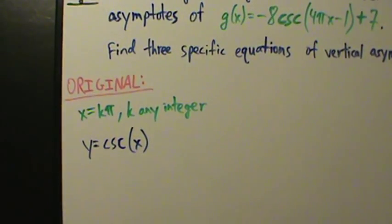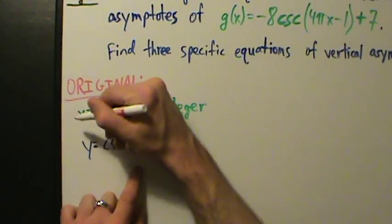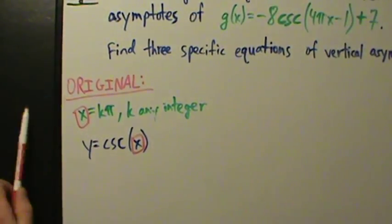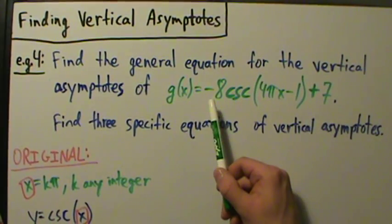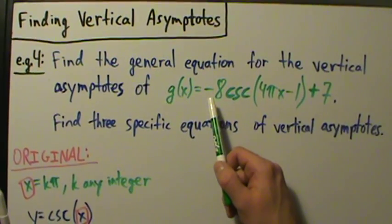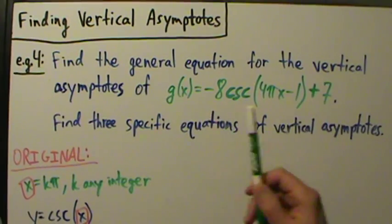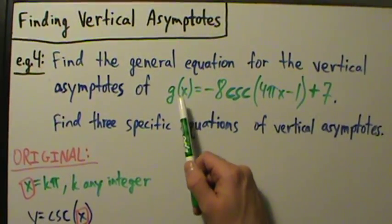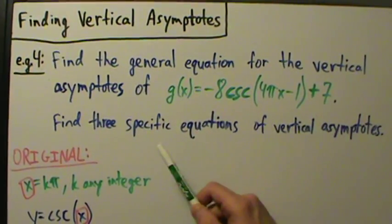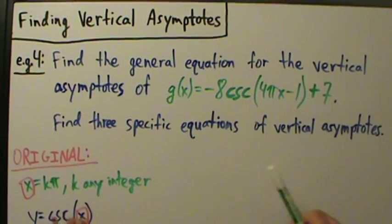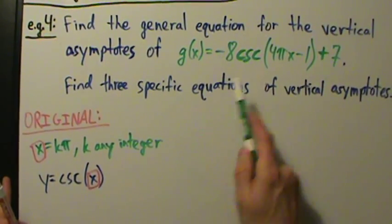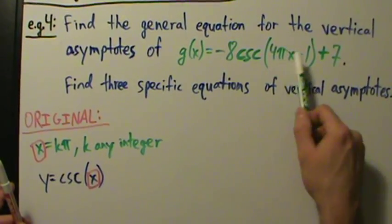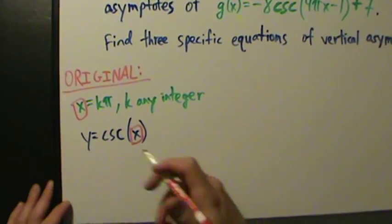Just like we've been doing in examples 1, 2, and 3, we take the entire expression inside the cosecant and set it equal to kπ. The only things that matter are which trig function it is and what's inside of it. The -8 makes absolutely no difference, the +7 outside changes nothing, and the name g(x) makes no difference. Since it's a cosecant, we use kπ - just like cotangent also uses kπ.